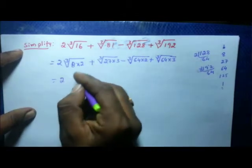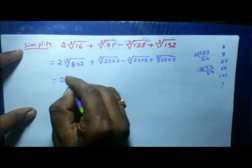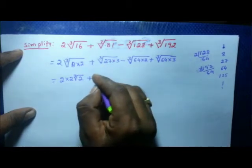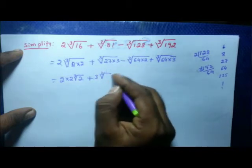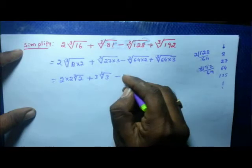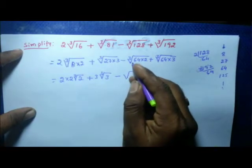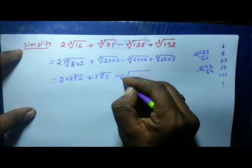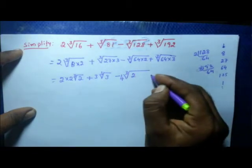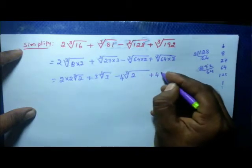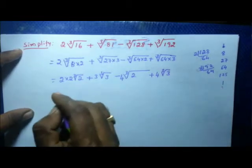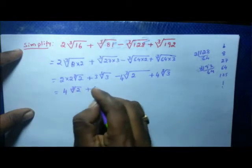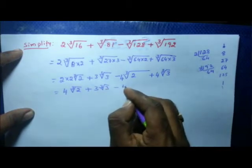Now evaluate the cube roots: cube root of 8 is 2, so we write 2 into 2 times cube root of 2. Plus cube root of 27 is 3, so 3 times cube root of 3. Minus cube root of 64 is 4, so 4 times cube root of 2. Plus cube root of 64 is 4, so 4 times cube root of 3. Multiply the whole number coefficients: 2 into 2 gives 4 times cube root of 2.